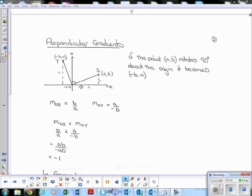So looking at the gradient of each one, the gradient when we do Y2 minus Y1 over X2 minus X1, we are just looking at the change in height over the change in the horizontal distance. So basically up over along is B over A. So the gradient of O to S is B over A, the gradient of O to T is A over negative B, because we're going B to the left here.